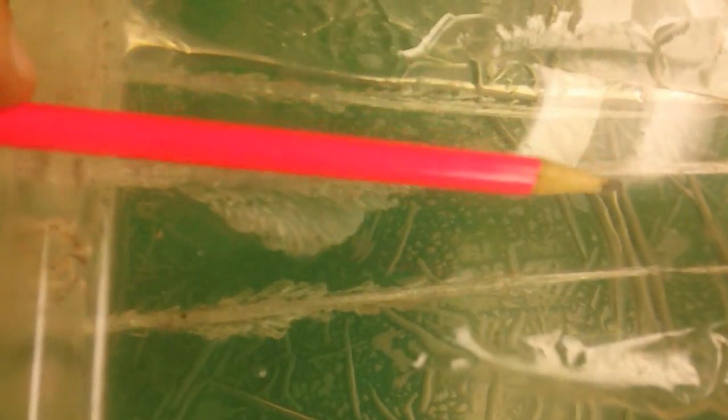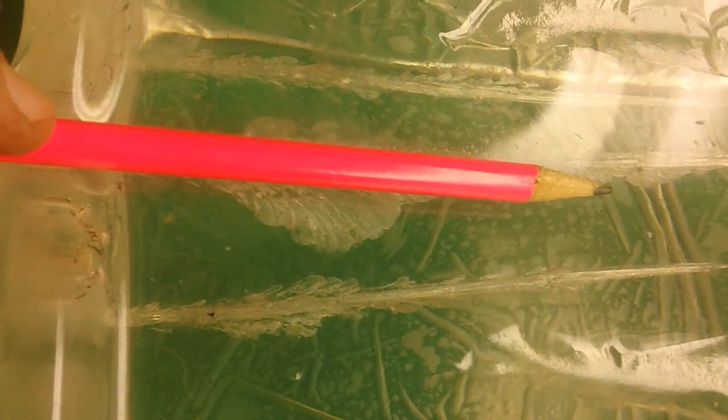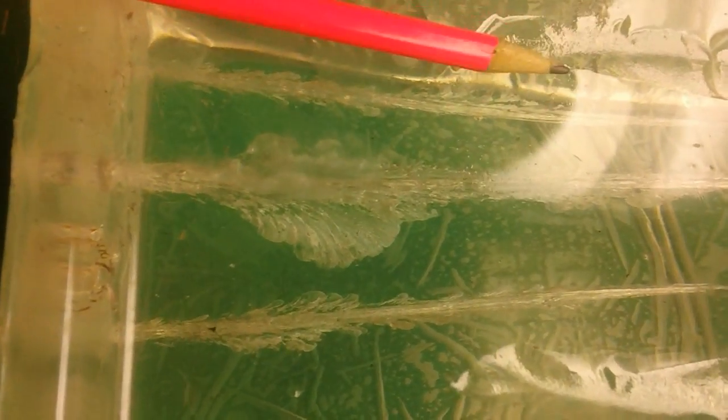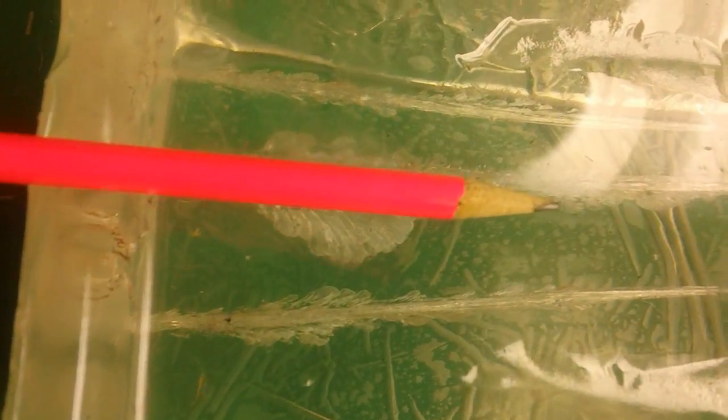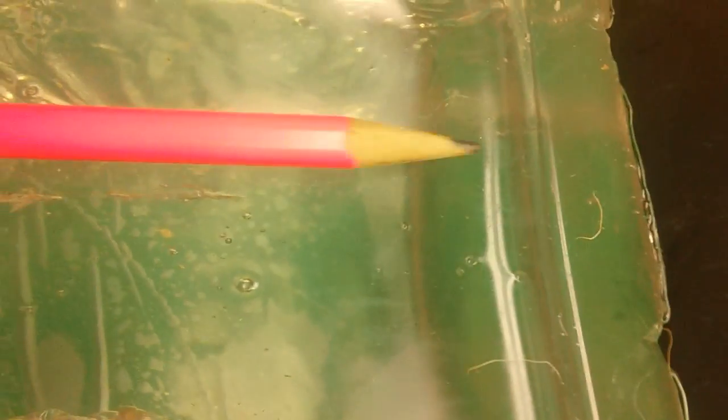All right, the 357 is this one right here. This one was the 38, this one was the plus P, the 357 is right here. So if you follow along right here, we have a pretty good expansion and it did go, if you follow this wound channel, all the way through and out the back.